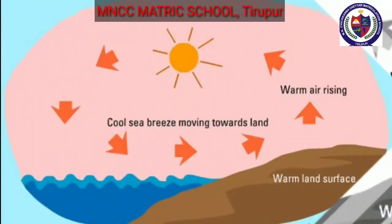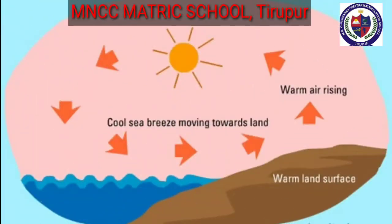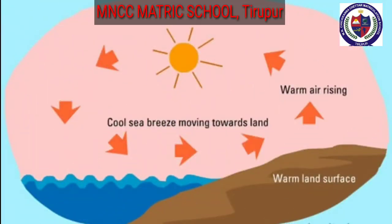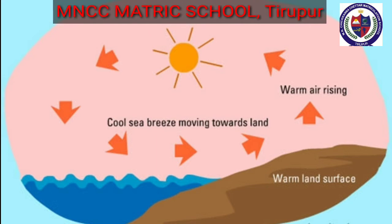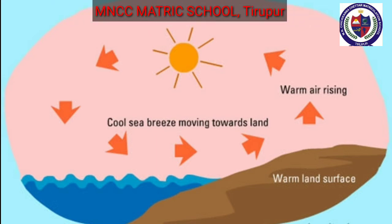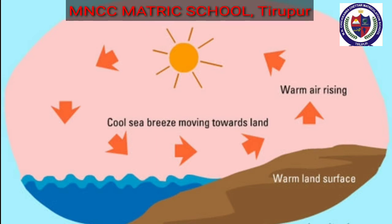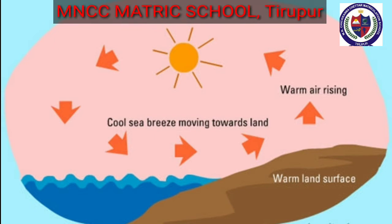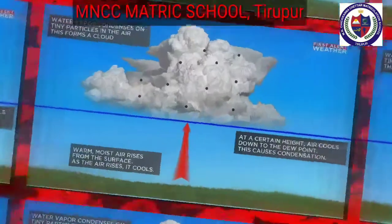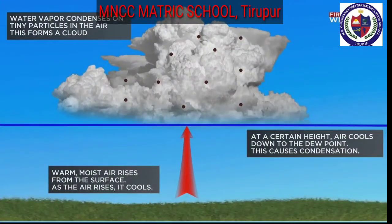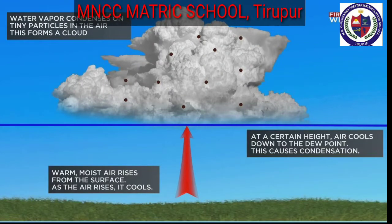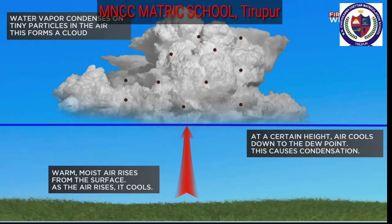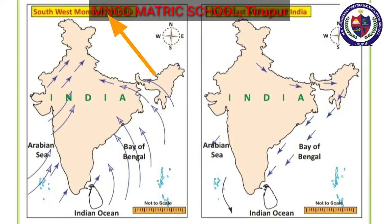Do you know why monsoon rain occurs? Most of the time during summer, the land is warmer than the ocean. This causes air to rise over the land and air to blow in from the ocean to fill the void. As you know, rising air leads to cloud formation and precipitation.